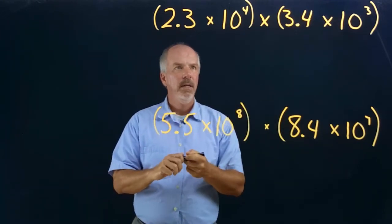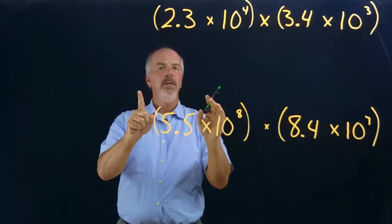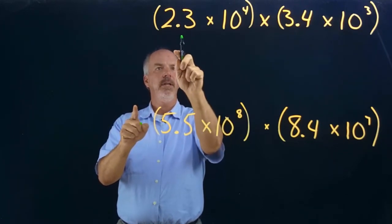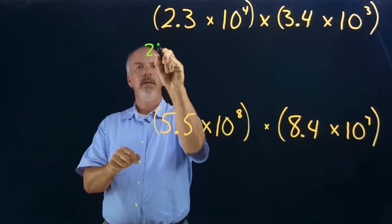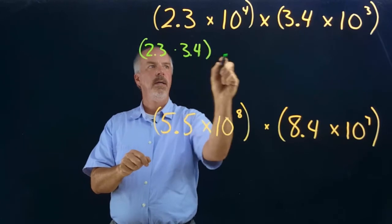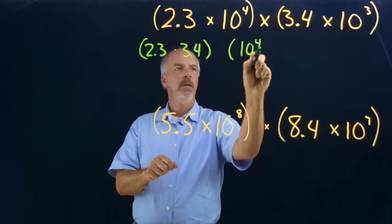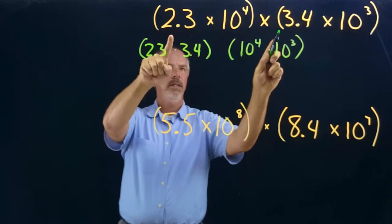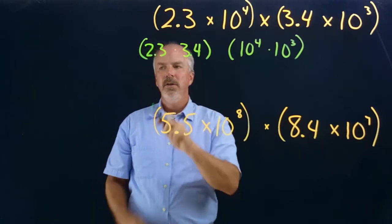So we have 2.3 times 10 to the fourth times 3.4 times 10 to the third. The first thing we do is multiply the coefficients — our first factors of each scientific notation number. So 2.3 times 3.4, and that's going to be multiplied by 10 to the fourth times 10 to the third. We're multiplying our coefficients and then multiplying our powers of 10 separately.